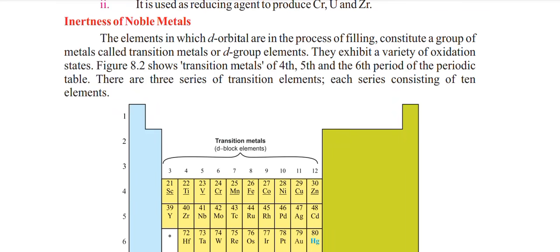Welcome to the 9th class chemistry book, Chapter number 8: Inner Transition Metals. The elements in which d-orbitals are being filled contribute to a group of metals called Transition Metals. Figure 8.2 shows the Transition Metals of the 4th, 5th, and 6th periods of the periodic table. There are three series of Transition elements, each series consisting of ten electrons.